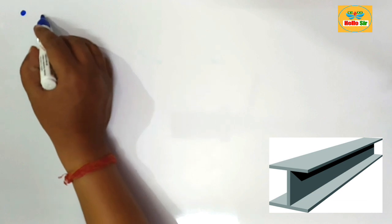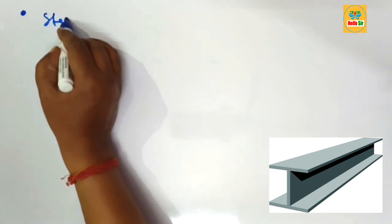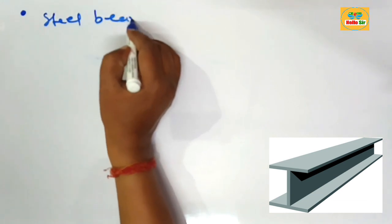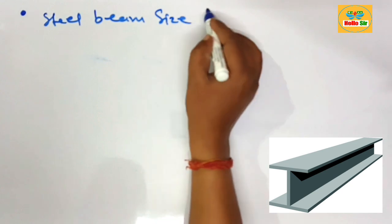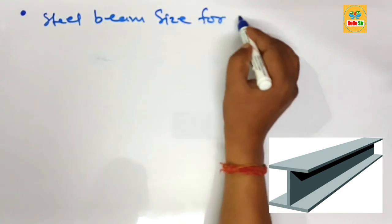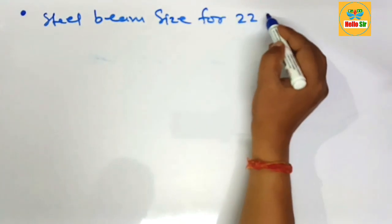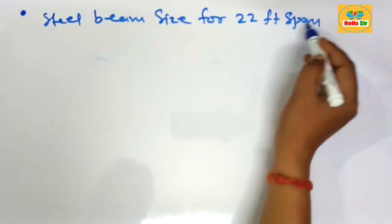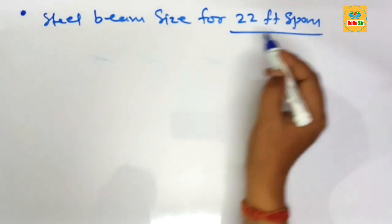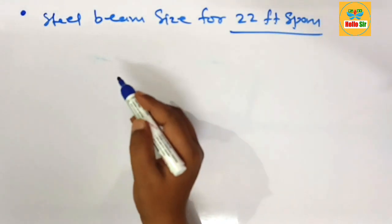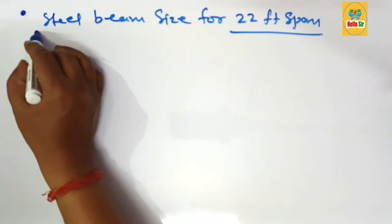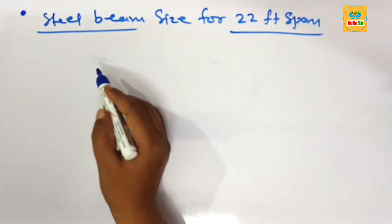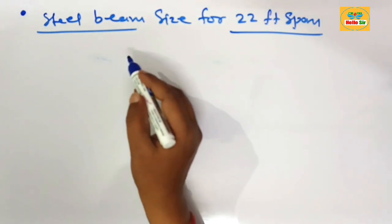Today in this video we look at steel beam size for a 22-foot span. The span length is about 22 feet, the type of beam is a steel beam, and the question is: what size steel beam do I need for a 22-foot span?